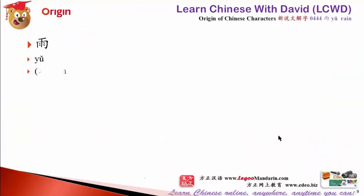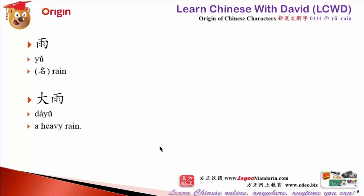Let's look at some vocabulary. 雨 means rain. 大雨 means big rain — that's why Chinese people say 大雨. In English we say heavy rain. 大 means big, so 大雨 means heavy rain.